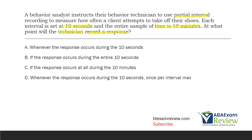Answer C — if the response occurs at all during the 10 minutes — well, the 10 minutes is our sample of time, so we're thinking about intervals specifically. Answer D — whenever the response occurs during the 10 seconds, once per interval max — yes, D is more specific than A and is a better answer. We're going to record a response if it occurs during the 10 seconds, but we're only recording one response max. Even if that response occurs 20 times, we still only count one. Remember, read all answer choices, pick the best answer, and understand why the wrong answers are wrong.